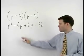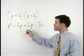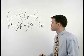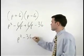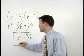Notice that our two middle terms will cancel each other out. So we have P squared minus 36 as our final answer.